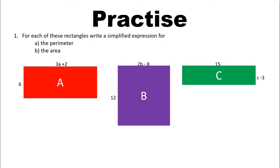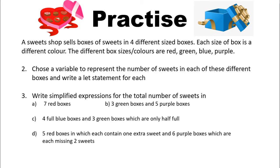Let's go on to questions two and three. A sweet shop sells boxes of sweets in four different sized boxes. Each size is a different color: red, green, blue, and purple. Choose a variable to represent the number of sweets in each of these different boxes and write a let statement for each. The missing information is the number of sweets in each of the different boxes. Make sure you make a clear let statement so that we can use your variables in question three, which asks you to write simplified expressions for the total number of sweets in different numbers and sizes of boxes. Go ahead and hit pause, copy the question, and work through your answers.